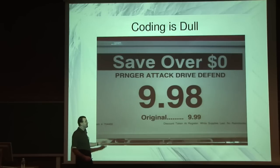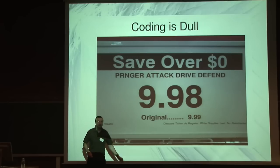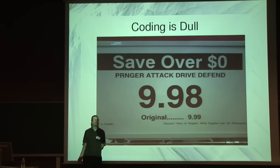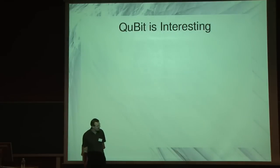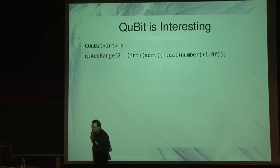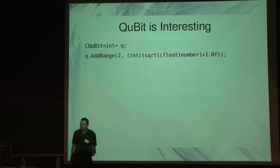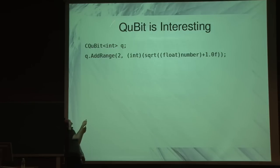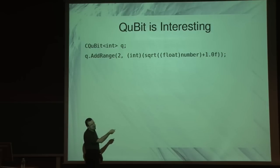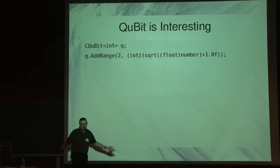So wouldn't it be great if we could write with an API that's a little bit more interesting, where variables disappear and have lots of values at the same time? We'll create a qubit — this time it's going to be integer-based. We're going to add a whole load of numbers between 2 and the square root of some other arbitrary number.